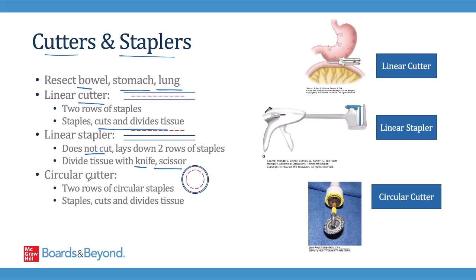Finally, you have the circular cutter, which is often used to bring together intestines that lie deep in the pelvis and are typically out of reach. It fires two rows of circular staples and then cuts and divides the tissue on the inside of those two staple lines in order to provide reinforcement to prevent leaks.